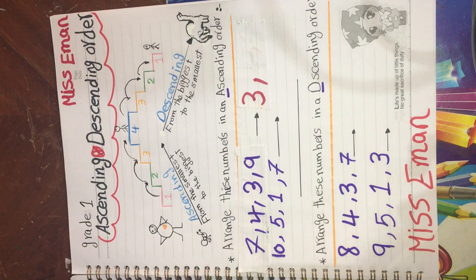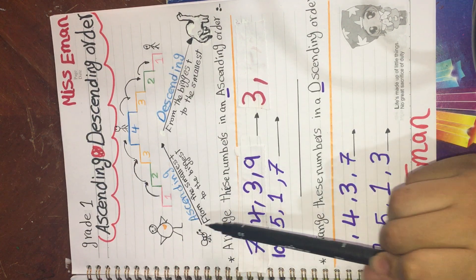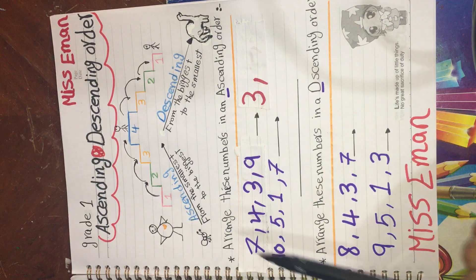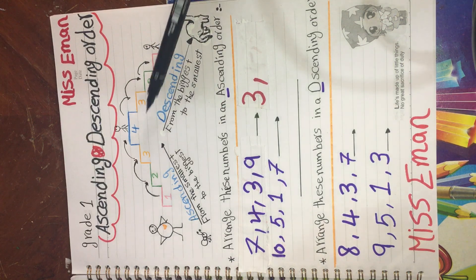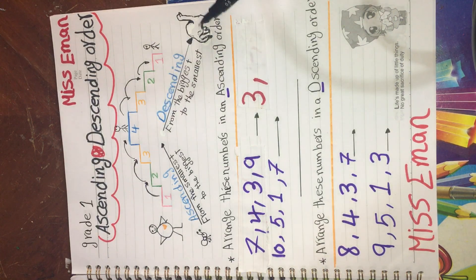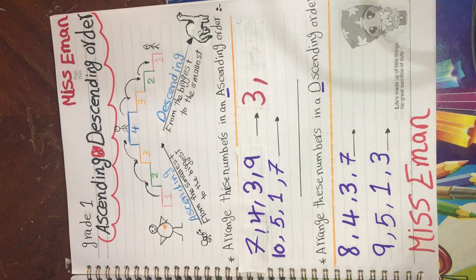Ascending starts with A, and ant starts with A. Ant is small, so we start from the smallest number to the biggest number. Descending starts with D, and dinosaur starts with D. Dinosaur is big, so we start from the biggest number to the smallest number.